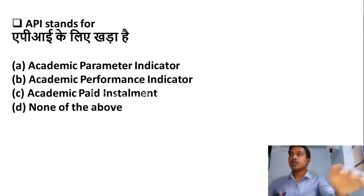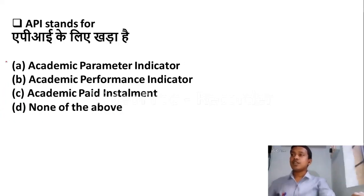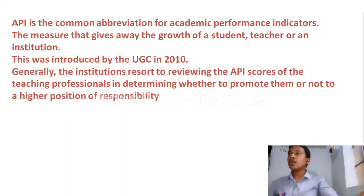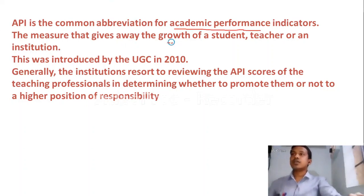Our next question: API stands for — Option A: Academic Parameter Indicator. Option B: Academic Performance Indicator. Option C: Academic Paid Installment. Option D: None of the above. The right answer is Option B — Academic Performance Indicator. API is the common abbreviation of Academic Performance Indicator, which is the measure that gives an account of the growth of a student, teacher, or an institution. Please remember this.